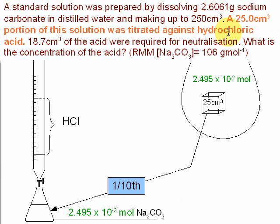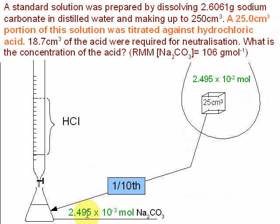The next line of the question begins: a 25 cm³ portion of this solution. 25 cm³ of the 250 cm³ volumetric flask is one tenth. So we're going to take out a tenth of the sodium carbonate. This value is ×10⁻³ as opposed to the other which is ×10⁻². This is a tenth of the amount of sodium carbonate.